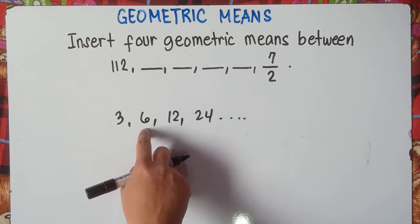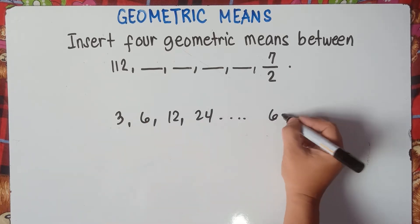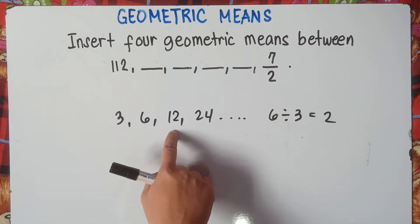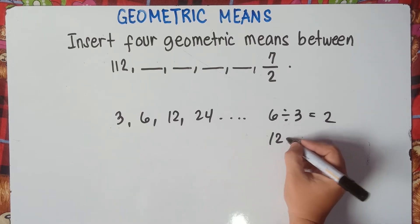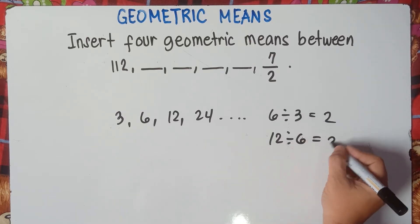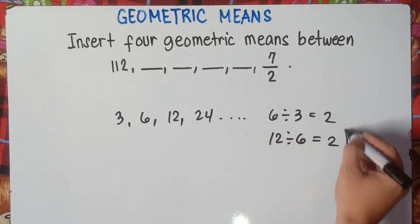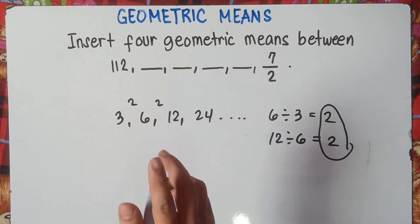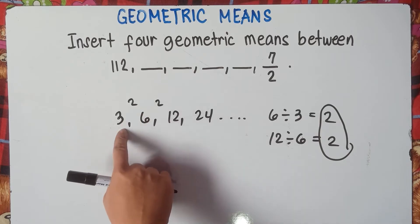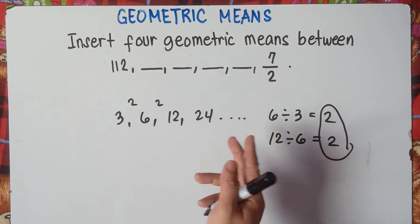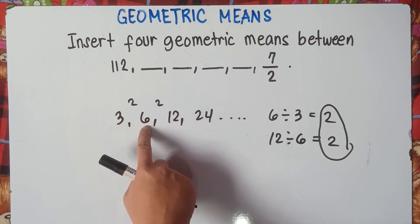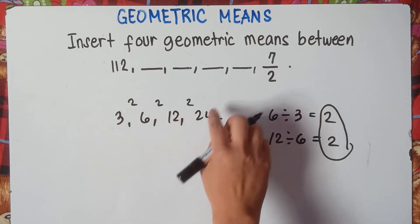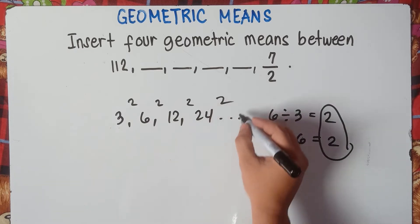To get the common ratio, you simply divide the second term by the first term. So 6 divided by 3 is 2. You also check by dividing the third term by the second term: 12 divided by 6, that is 2. So the common ratio is 2.